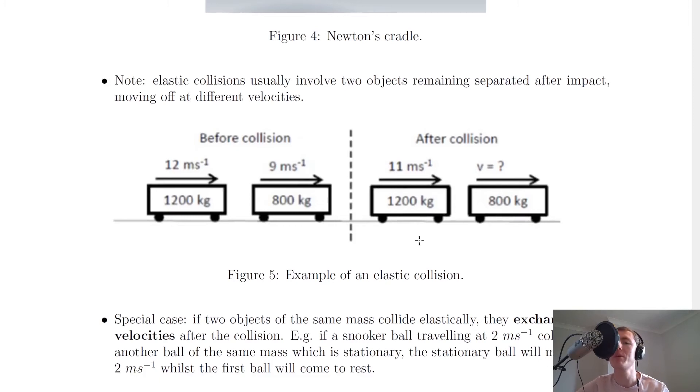Now this picture here shows us a typical example of an elastic collision. And it says here that note, elastic collisions usually involve two objects remaining separated after impact, moving off at different velocities.